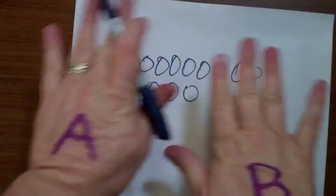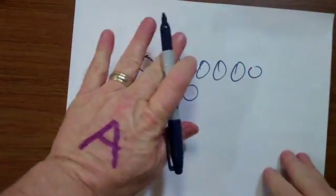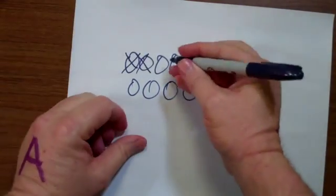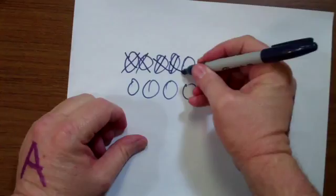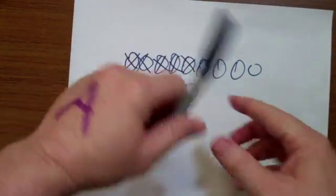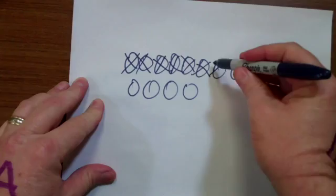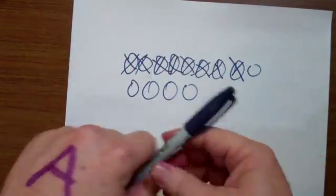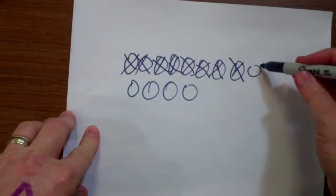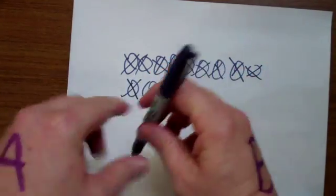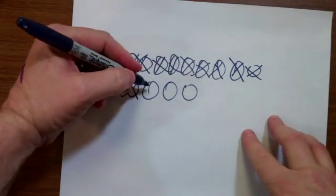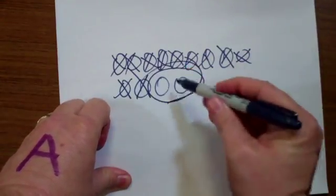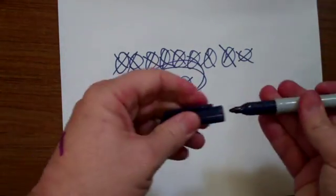So player A and player B take turns going back and forth. So player A can cross off two and then player B can cross off two. And then player A can cross off one. And player B can cross off two. And then player A can cross off one. And then player B can cross off two. And then player A can cross off one. And once again,